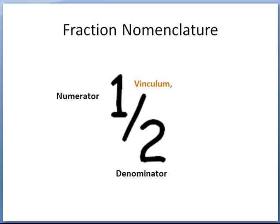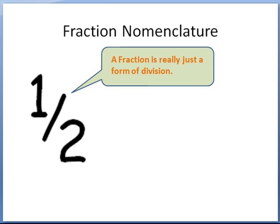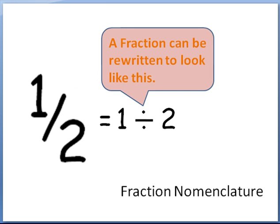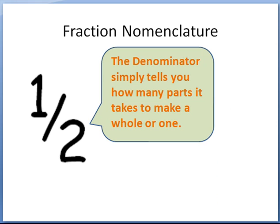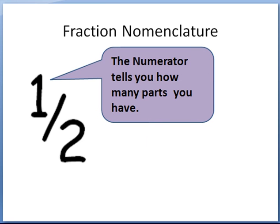The numerator and the denominator. A fraction is really just some form of division. A fraction can be rewritten to look like 2 divided into 1, and that would equal 0.5 in decimals — but decimals are beyond the scope of this lesson. The denominator simply tells you how many parts it takes to make 1, or a whole, and the numerator tells you how many parts you have.